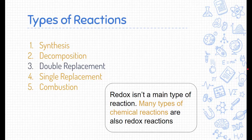Some of you might be confused at the moment. We didn't learn about redox being a type of main reaction, and it's not. Redox isn't a main type of the five reactions we learned about. Redox is a subset of many types of chemical reactions. Synthesis, decomposition, single replacement, and combustion are all redox reactions as well.